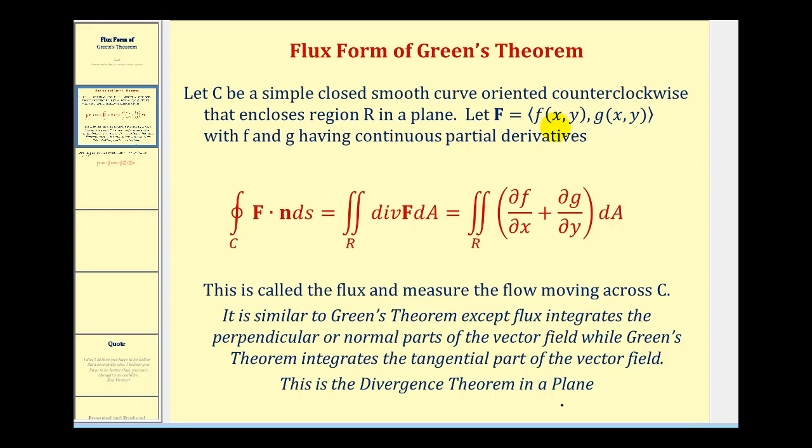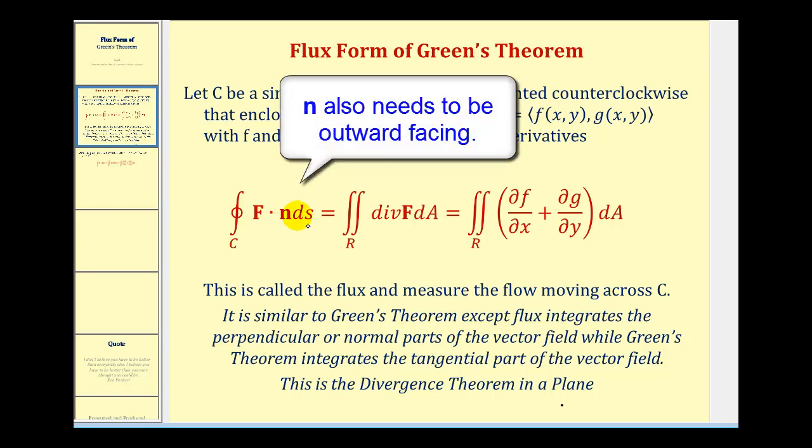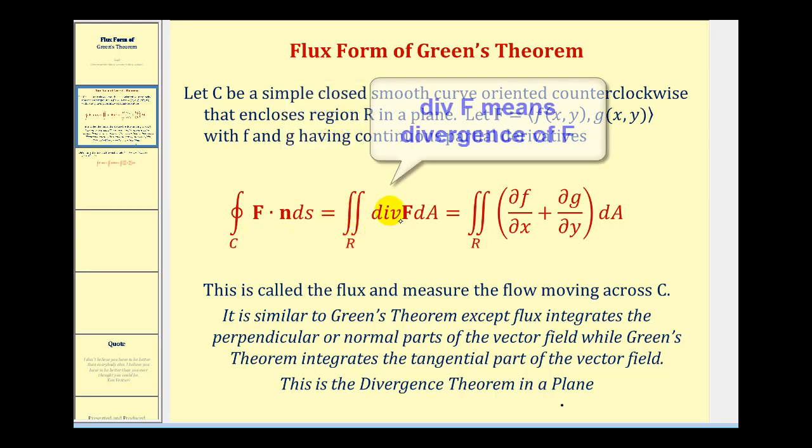both having continuous partial derivatives, then the flux is equal to the line integral of F dotted with N, where N is a unit normal vector, integrated with respects to S or arc length, which is equal to the double integral over the region R of div F differential A,